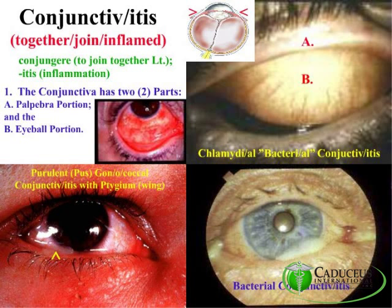So it's a joining together — it's where the membrane comes over the eyeball and meets the part that comes from the eyelid. The top picture is conjunctivitis caused by a chlamydia organism. The bottom left picture shows conjunctivitis caused by a gonococcal organism.